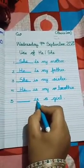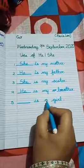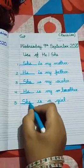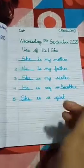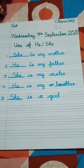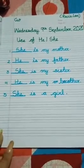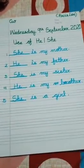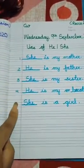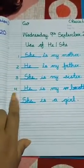Number five: dash — Is a Girl. So write here H-E or S-H-E. She is a Girl.